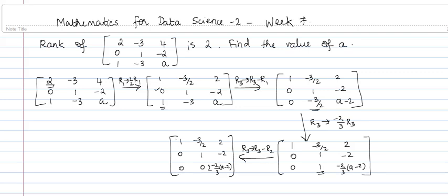It's given that the rank of this matrix is 2. So the rank of the reduced matrix should also equal 2 — that is, the number of nonzero rows. The number of nonzero rows should be 2, which means the last row must be entirely zero.